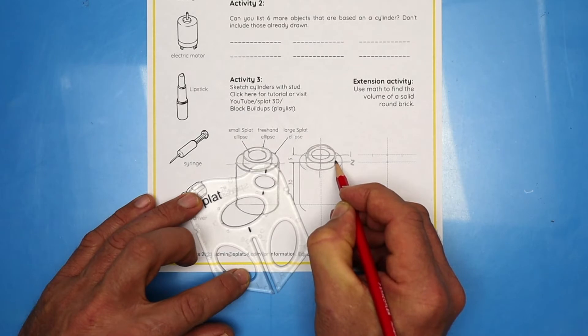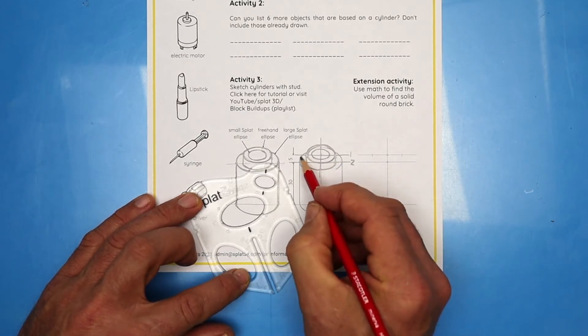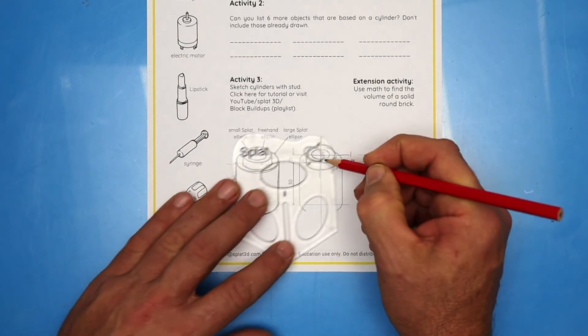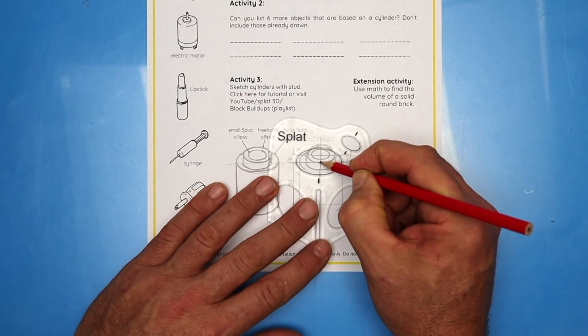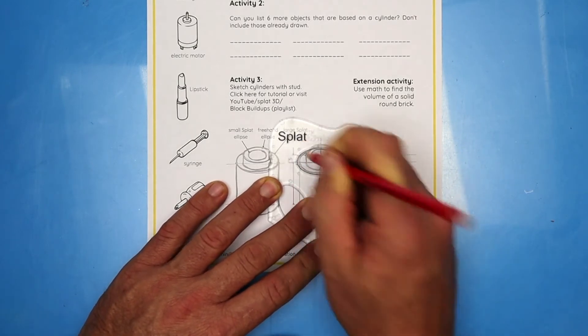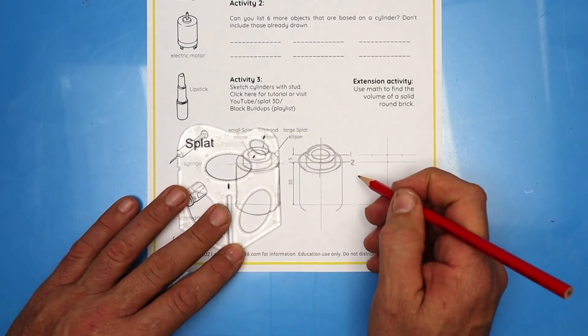Now it's time to draw the larger ellipse. We'll use the Splat for that, but where is the center? It's on exactly the same axis of symmetry. So line up the big ellipse and draw in almost all of the whole ellipse. Some of it's hidden behind the stud.